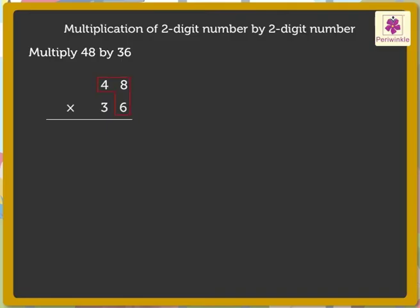Multiply the multiplicand, that is 48, by the 1's digit of the multiplier, that is 6. 8 into 6 is equal to 48. 4 into 6 is equal to 24, plus the carried over 4 is equal to 28. Here we got the first partial product, 288.